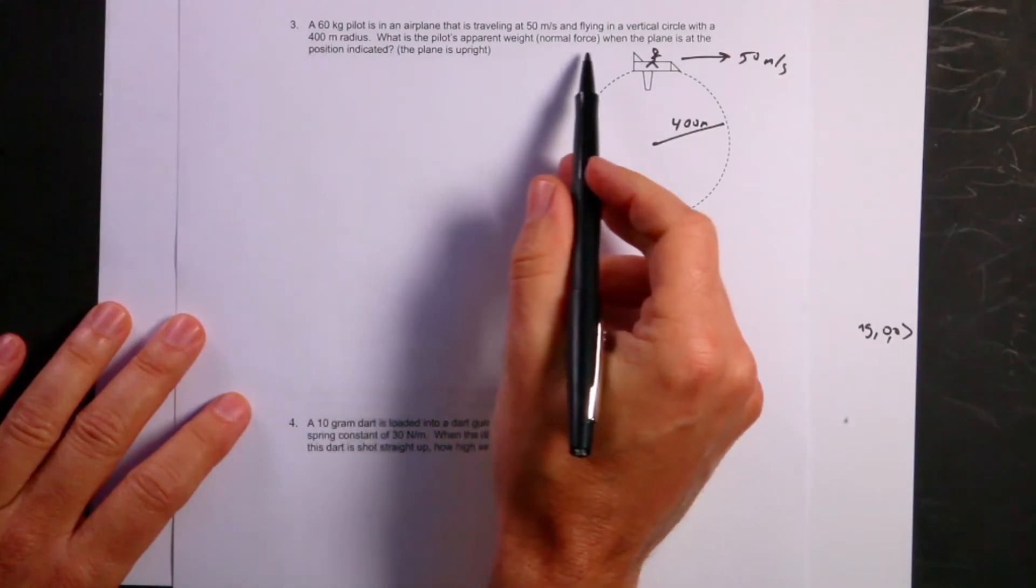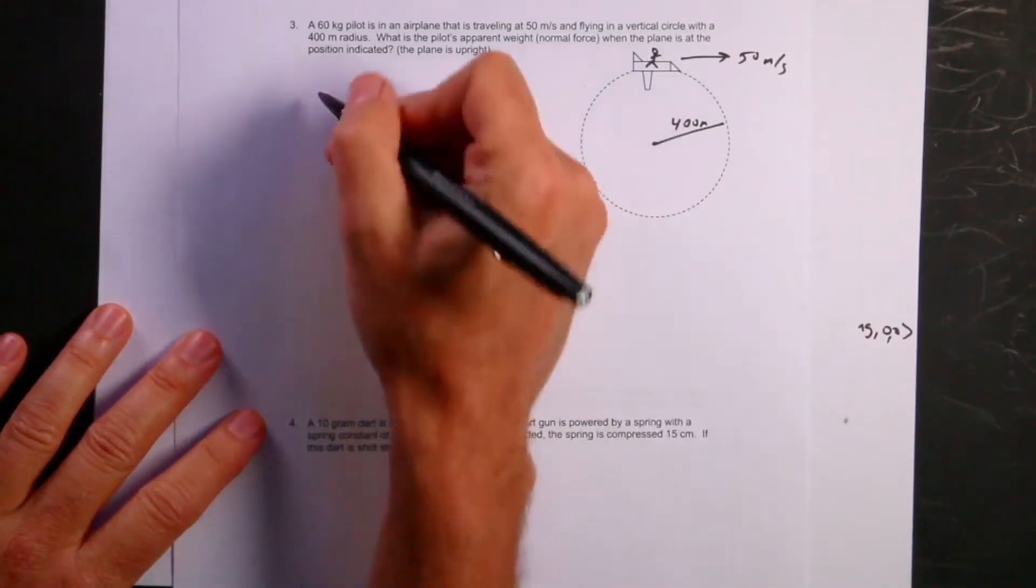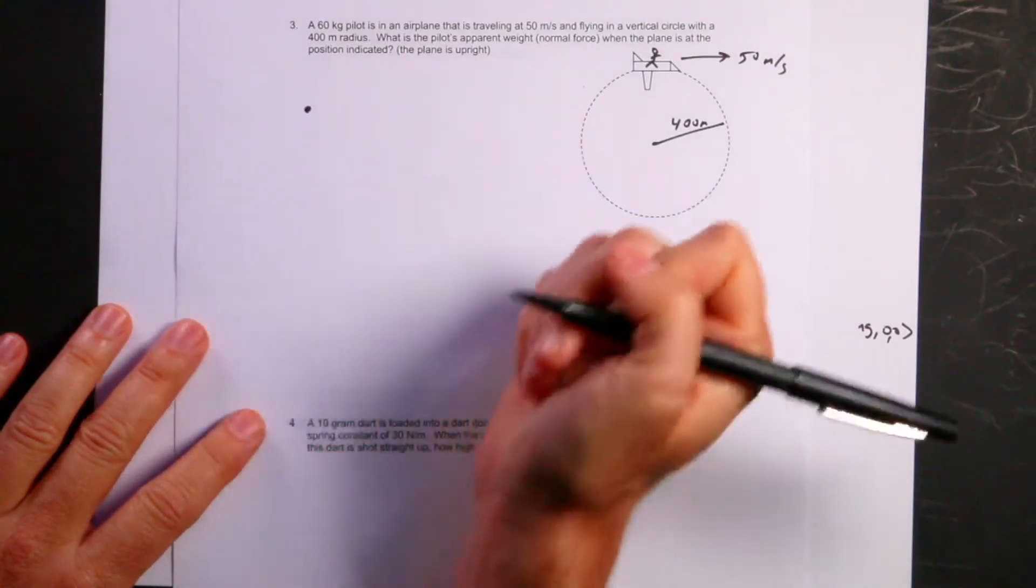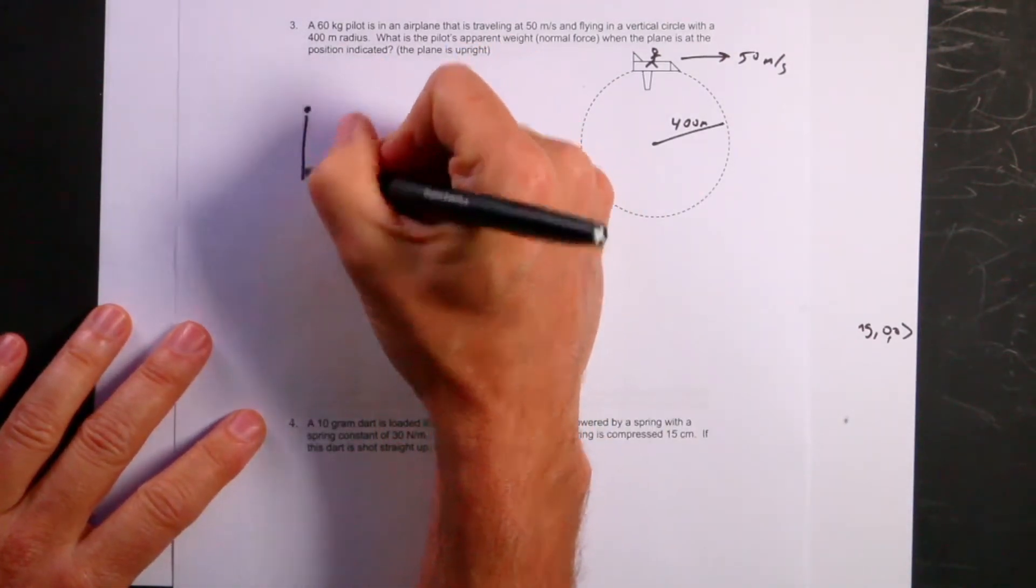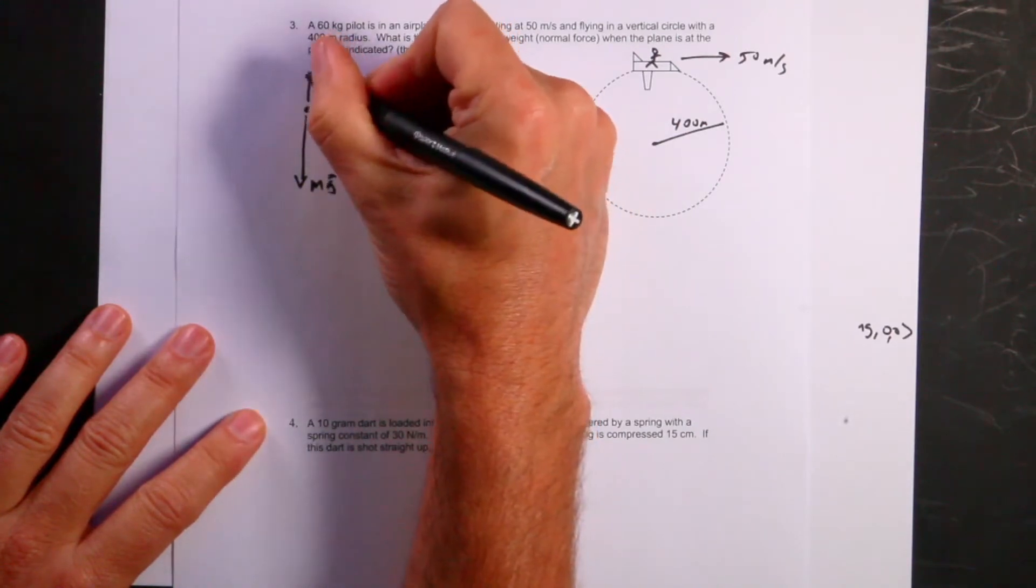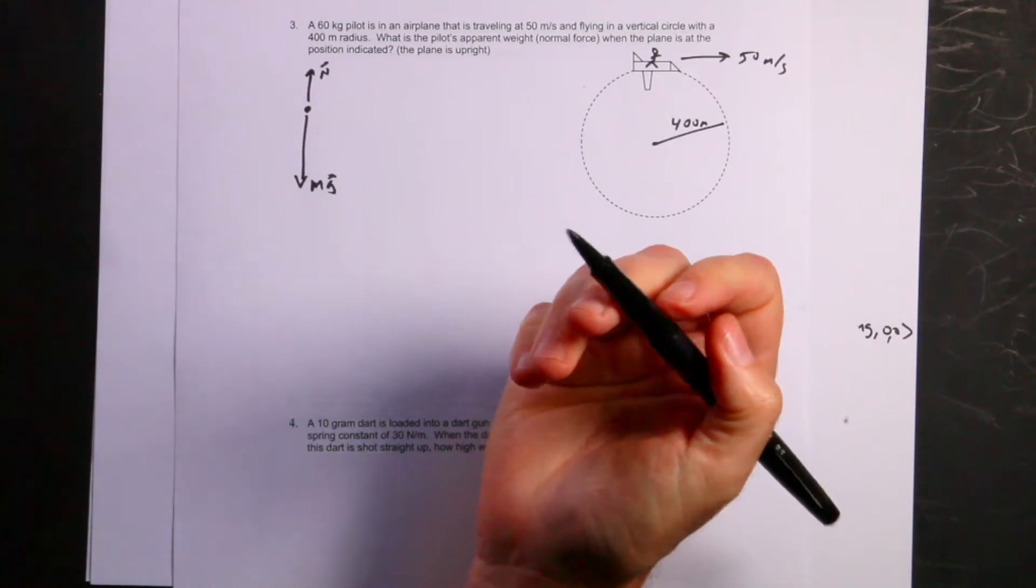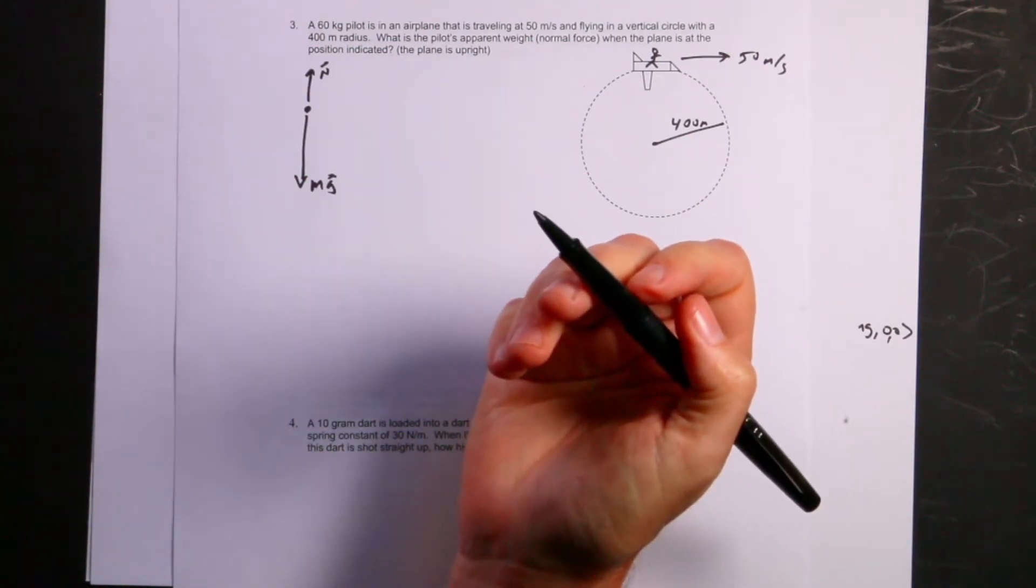What is the pilot's apparent weight, normal force, when the plane is at this position indicated? So let's draw the forces. I have the person right there. I have the gravitational force, mg, and then I have the normal force up. And I already know that the normal force is going to be lower than the weight. So I drew it that way. But if you didn't know, it's fine.